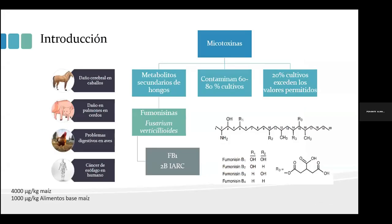Sabemos que las micotoxinas son metabolitos secundarios producidos por los hongos, y se sabe que alrededor del 60 al 80 por ciento de los cultivos están contaminados con este tipo de sustancias, y aproximadamente el 20 por ciento de estos cultivos exceden los valores permitidos para la presencia de micotoxinas. Dentro de estas micotoxinas, las fumonicinas, producidas principalmente por Fusarium verticiloides, siendo la fumonicina B1 una de las más importantes.